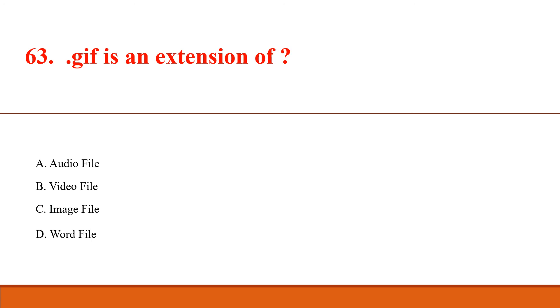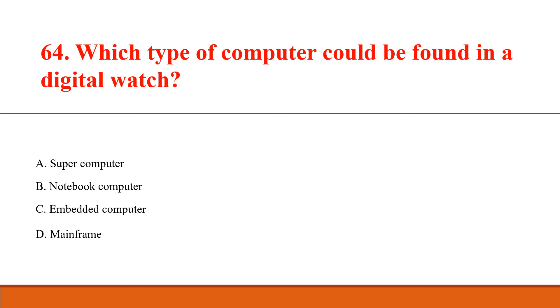GIF is an extension of? Answer Option C: Image file. Which type of computer could be found in a digital watch? Answer Option C: Embedded computer.